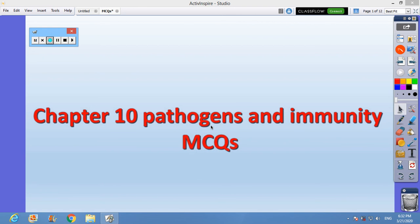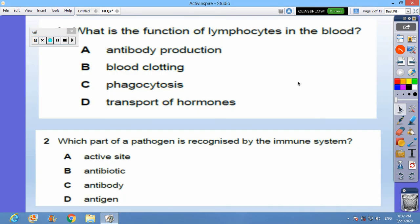Hello, assalamu alaykum everyone. This is Chapter 10 pathogens and immunity MCQ questions. The first question reads: what is the function of lymphocytes in the blood? The lymphocytes are to produce antibodies, that's why A is correct.